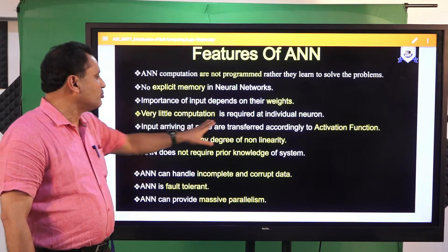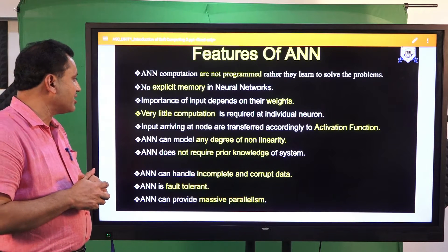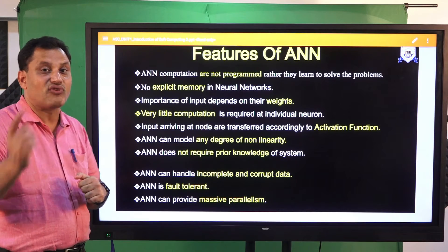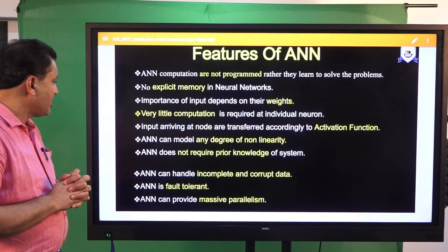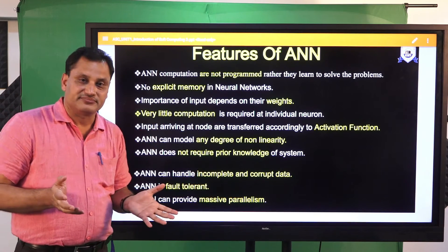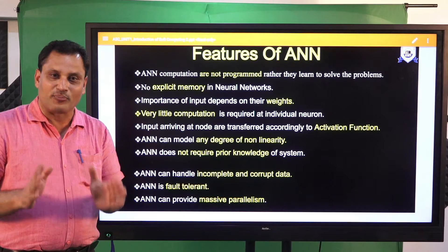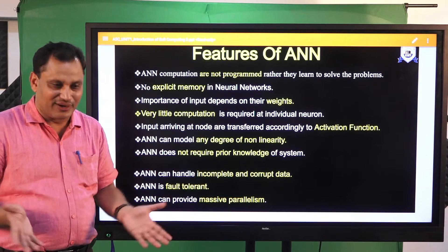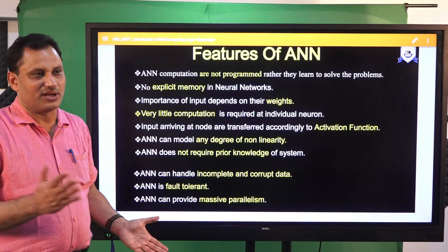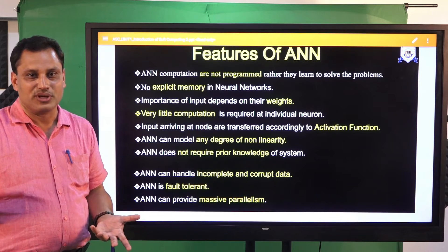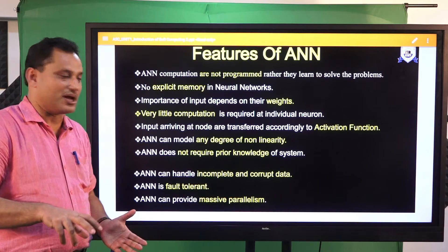Very little computation is required at the level of individual neurons. Inputs arriving at a node are transformed according to the activation function, which we will discuss in the next lecture. ANN can model any degree of non-linearity. It is suggested that when applying ANN, the problem should be non-linear in nature. If linearity exists, a simple y = f(x) function can solve it, so neural network is only suitable for non-linear problems.